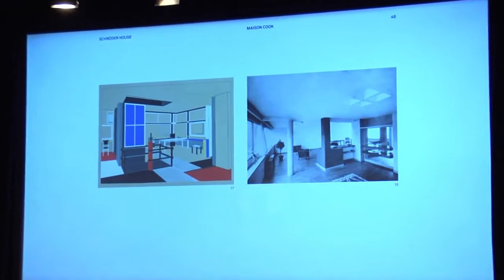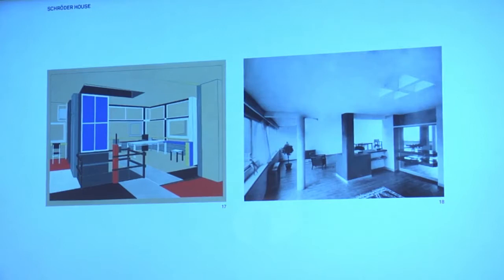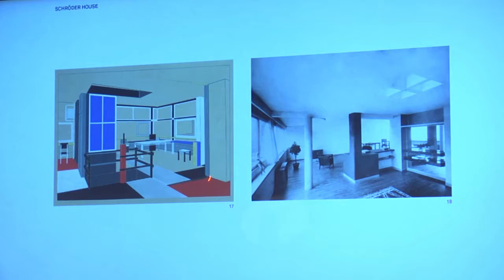This is actually a sort of retrospective color perspective by Rietveld of what was the original scheme, which included painting the wooden floorboards different neoplastic colors. The Maison Cook doesn't have that kind of color — it does use color, but not that kind. So you already have a difference. And then this space here is a double height space.